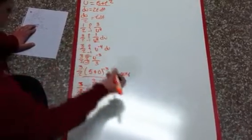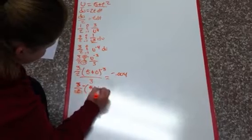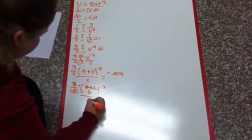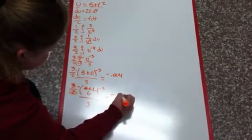And then negative 1 squared is a positive 1, so that equals, instead of 5 plus 1, it's just equal to 6 to the negative 3rd power over 3, and that equals negative 0.002.